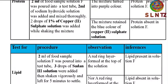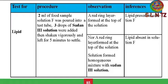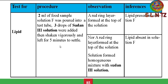For the lipid test: '2 ml of food sample solution was poured into a test tube. Three drops of Sudan III solution were added, then shaken vigorously, and left for 5 minutes to settle.' Note that a specified settling time must be included. When writing Sudan III or copper (II) sulfate, use a capital letter for the Roman numeral — write 'Sudan III' with a capital III and 'copper II' with a capital II. Using a small letter will result in lost marks.